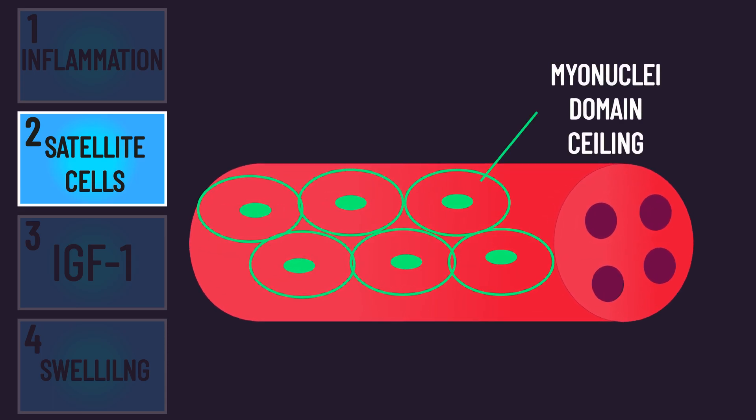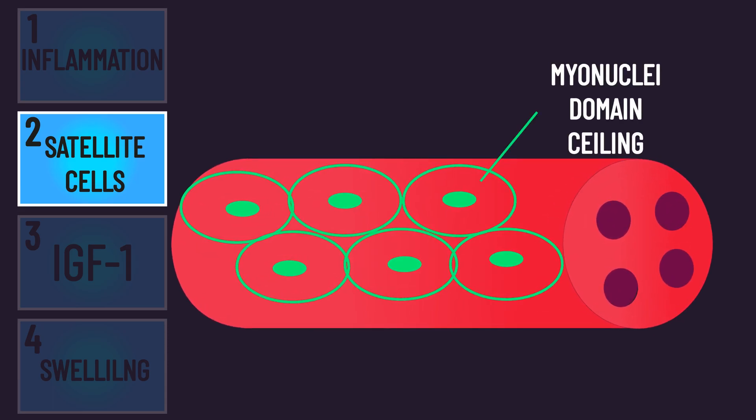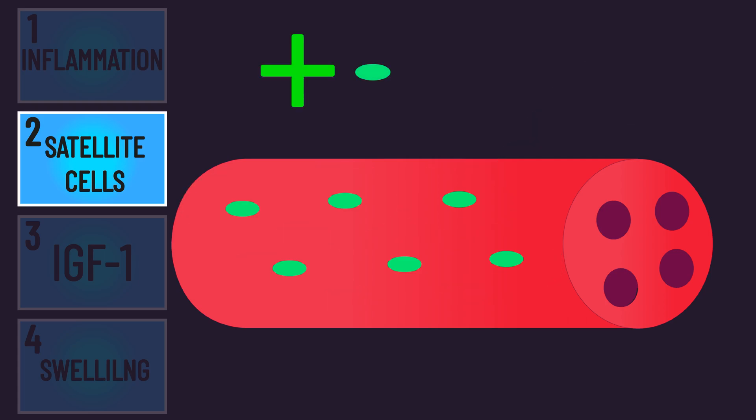As a muscle fiber increases in size, the myonuclei domain increases until it hits its ceiling, limiting further muscle fiber growth. From here, additional myonuclei would be needed to enable further fiber growth.